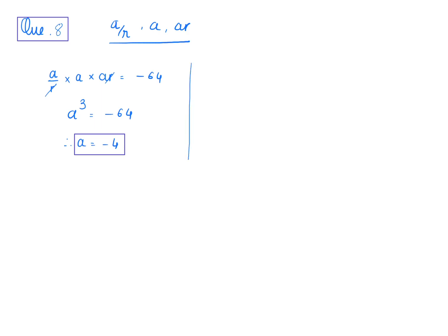We have also been provided the sum: a/r + a + ar = 6. Now we substitute the value of a, which is -4, into this equation.